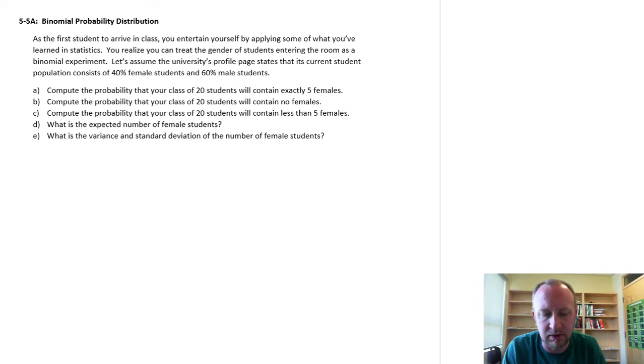We're a nerdy student. We've arrived at the class and we want to apply some statistics. So we're looking at the gender of students entering the room. It's a binomial experiment. There's two possibilities, male or female. And let's assume that the university's profile page states the current student population is 40% female, 60% male.